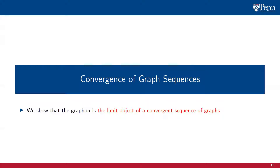We consider graph sequences and introduce the notion of convergence in terms of homomorphism densities. We use this convergence notion to define graphons as the limit objects of convergent graph sequences.